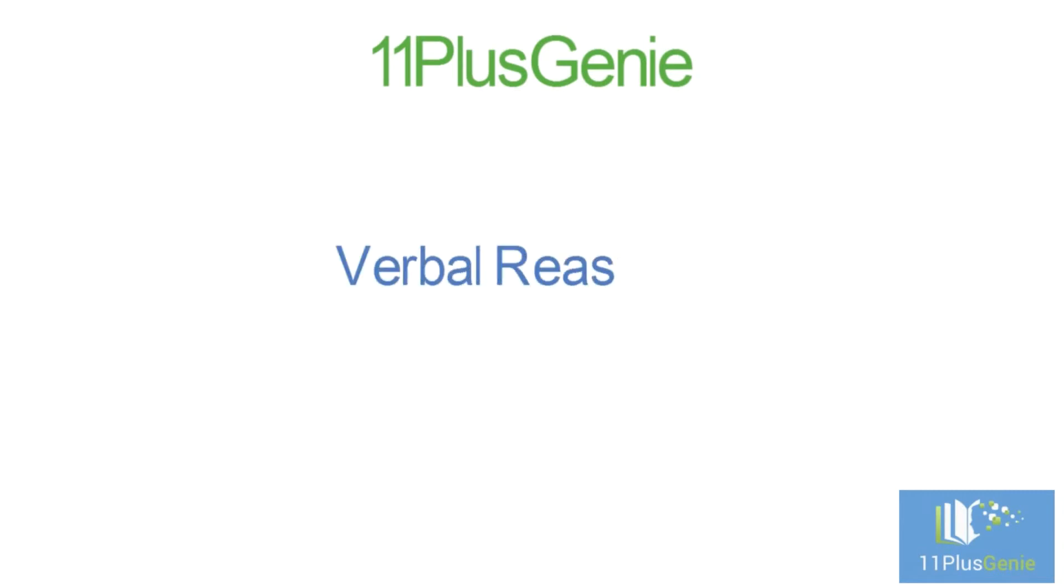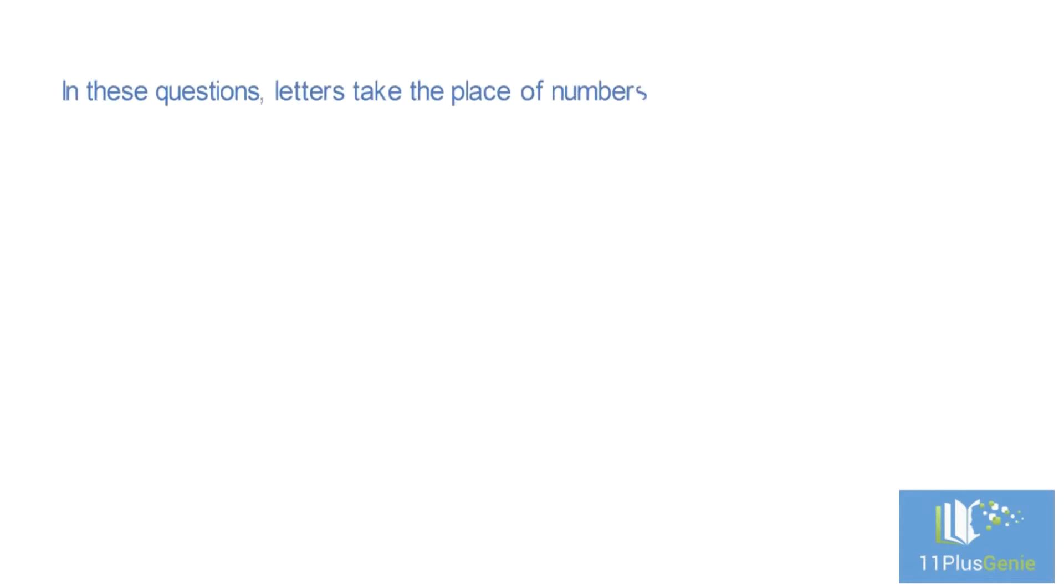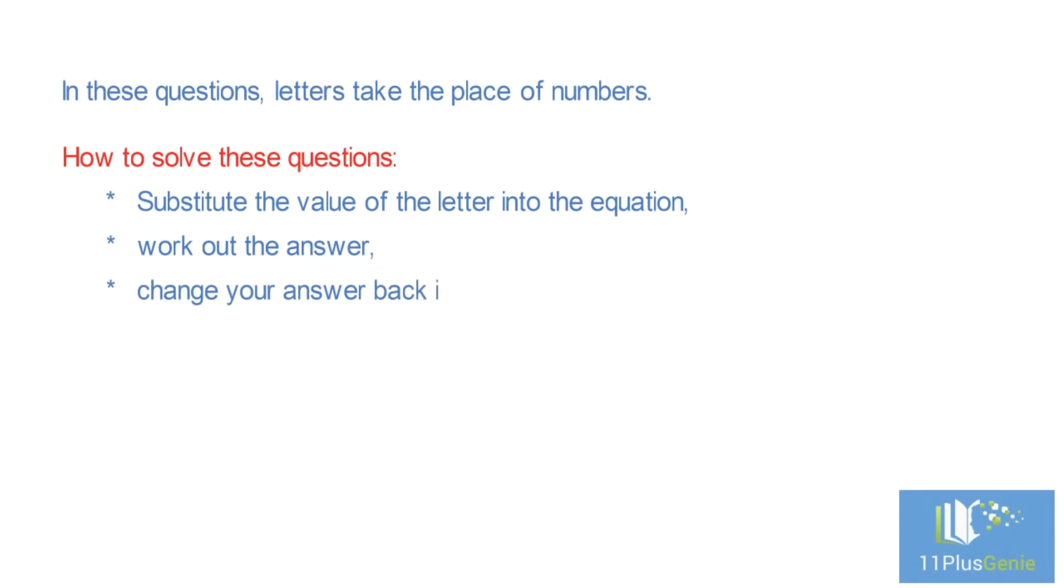Verbal reasoning type 17: substitution. In these questions, letters take the place of numbers. To solve these questions, we substitute the value of the letter into the equation, work out the answer, and change our answer back into a letter. In these questions, it is important to remember that we do the calculations from left to right.